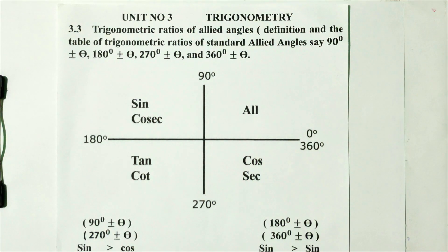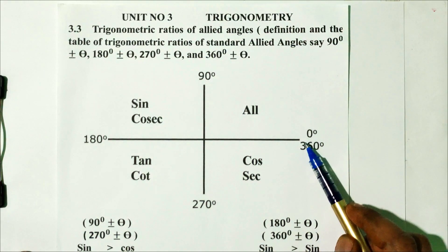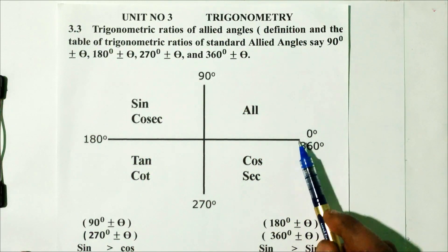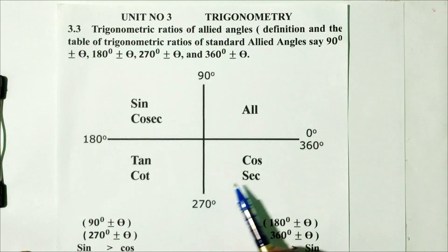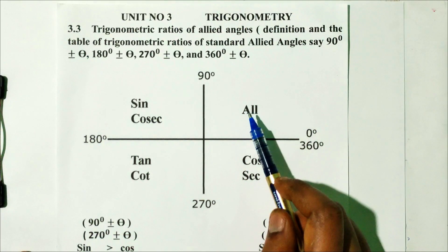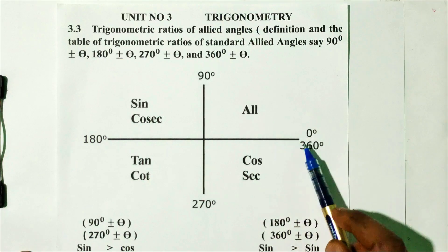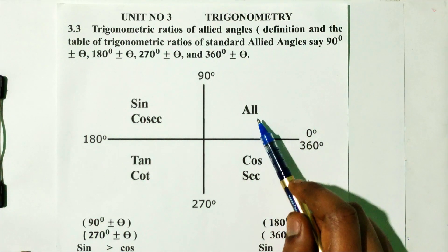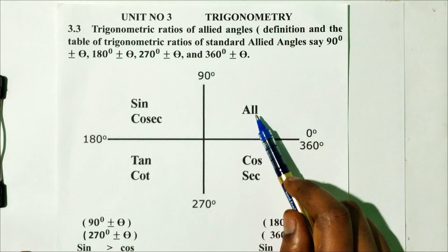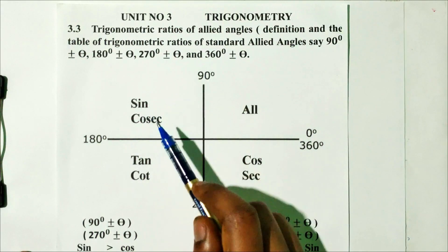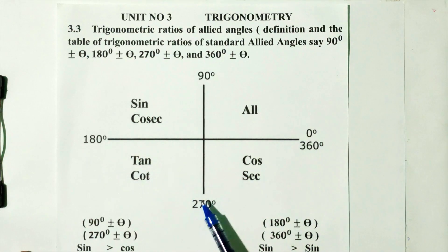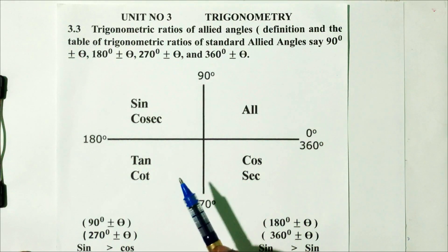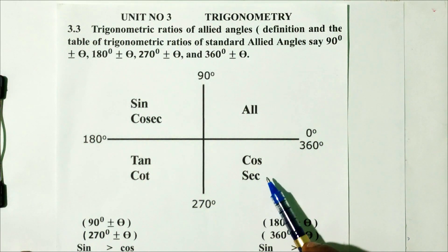The ASTC rule: in the first quadrant (0 to 90°), all trigonometric ratios are positive. In the second quadrant (90 to 180°), only sine and cosecant are positive. In the third quadrant (180 to 270°), the remaining ratios follow. In the fourth quadrant (270 to 360°), this is the basic concept.